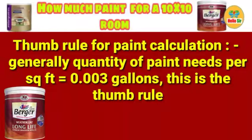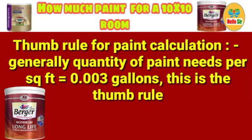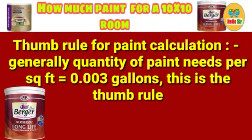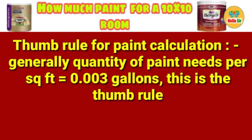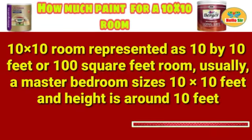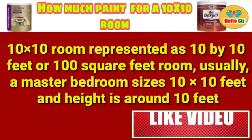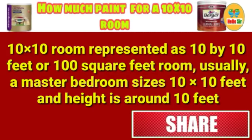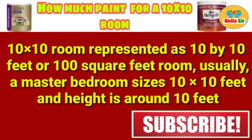Here we discuss the thumb rule for paint calculation. Generally, the quantity of paint needed per square foot equals 0.003 gallons — this is the thumb rule. The 10 by 10 room is represented as 10 by 10 feet, or 100 square feet.